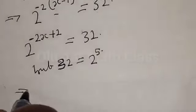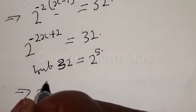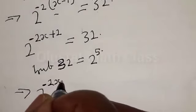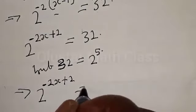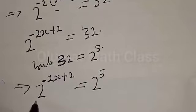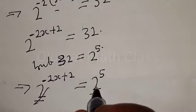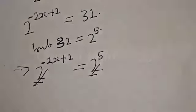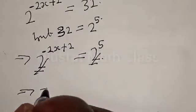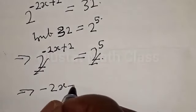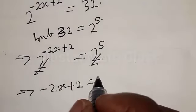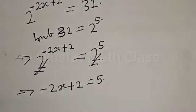This implies that we have 2 raised to power minus 2s plus 2, equal to 2 raised to power 5. Since they have the same base, the bases cancel. This implies that minus 2s plus 2 equals 5.